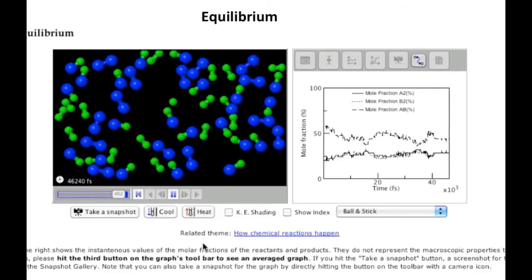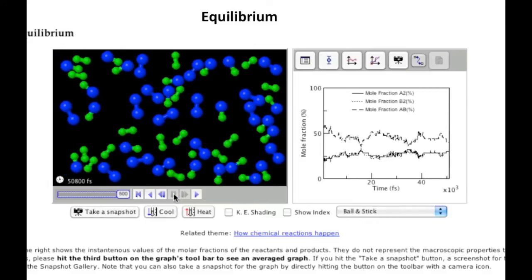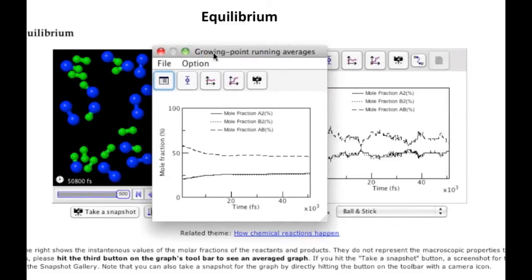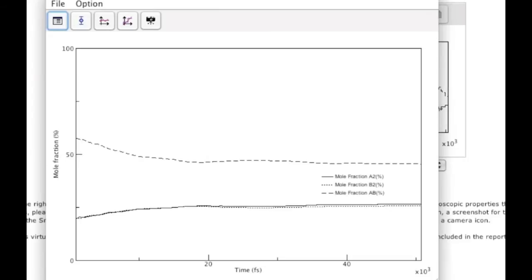So there's always something happening. However, if we pause here and look at the running average, you can see that the concentration of all the molecules eventually converge to a steady state, so that nothing much is happening here. So the concentrations of reactants and products are not changing over time, and that's equilibrium, and that's the definition of equilibrium.